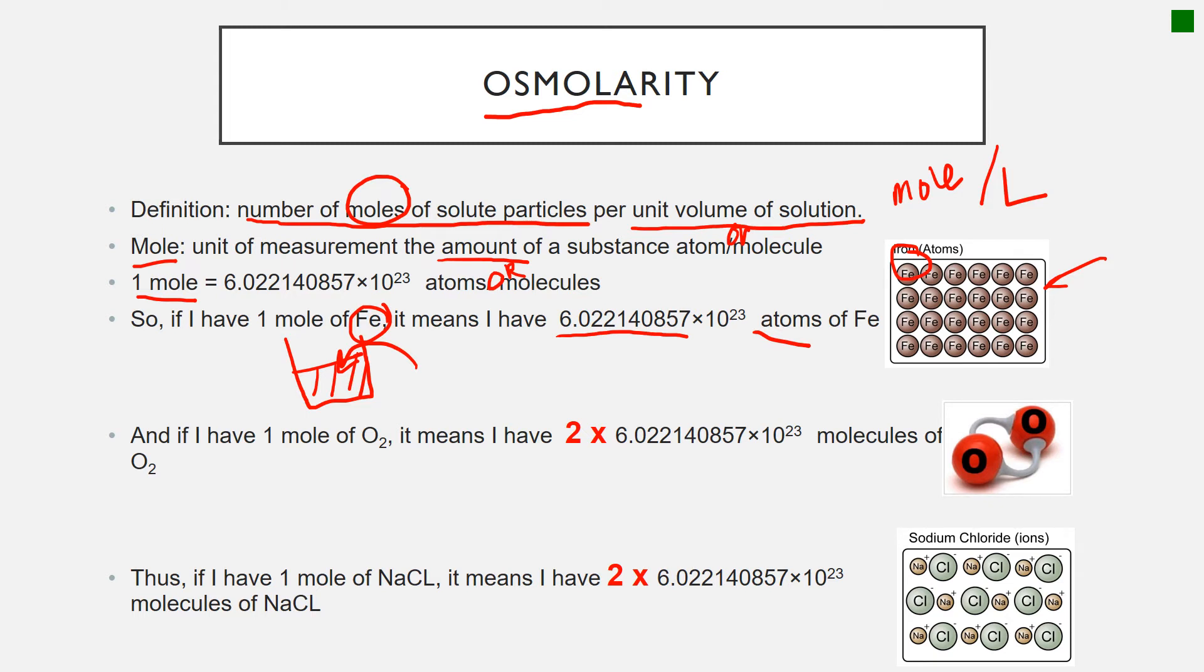Now what if I have oxygen? Oxygen is a molecule, O2. Now if I say in this bottle I have one mole of O2, it means that 2 times 6.022 times 10 to the power of 23. Why? Because oxygen, as you can see from this picture, is made of two atoms. So the O2 that is in one mole means that the first mole belongs to the first oxygen, the other mole belongs to the second oxygen.